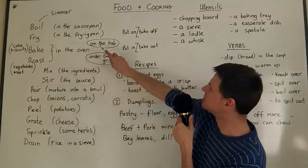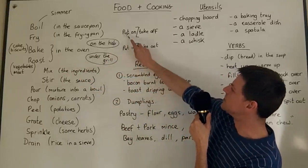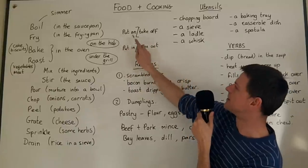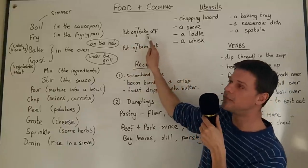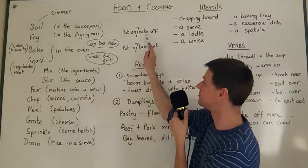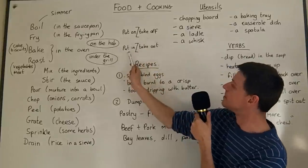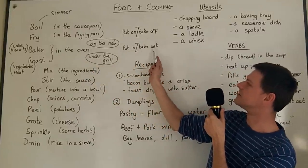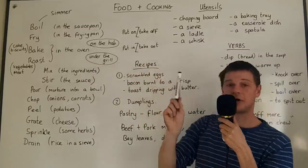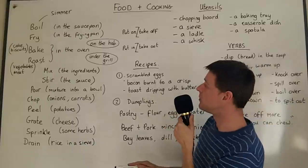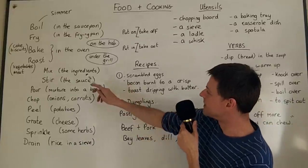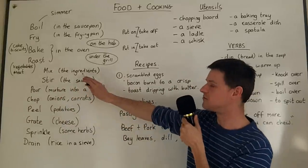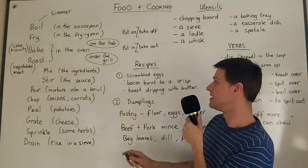You can also cook things on the hob — you put things on the hob and take them off the hob. Remember, 'put on' and 'take off' are opposites, just like with clothes. But you put something in the oven and take it out of the oven — so 'put in' and 'take out' are always opposites.